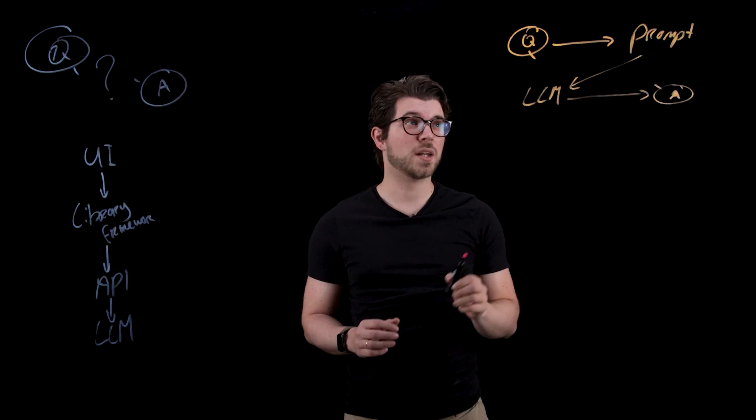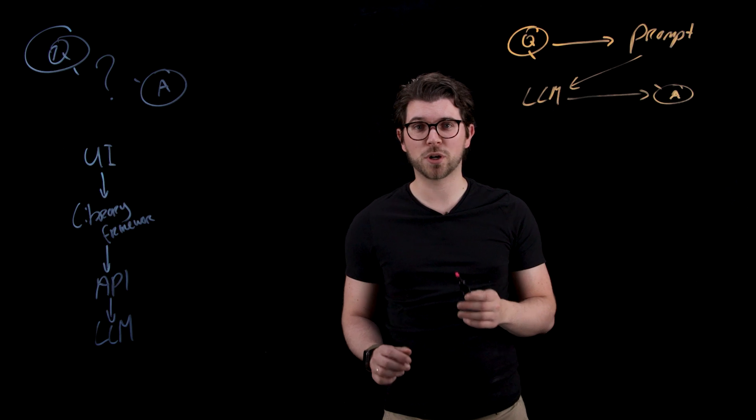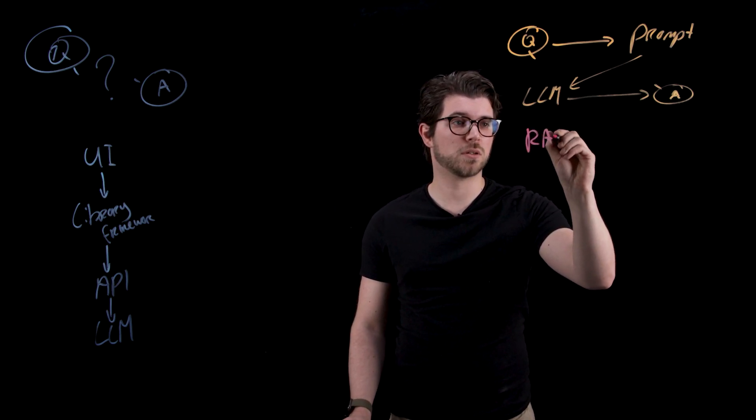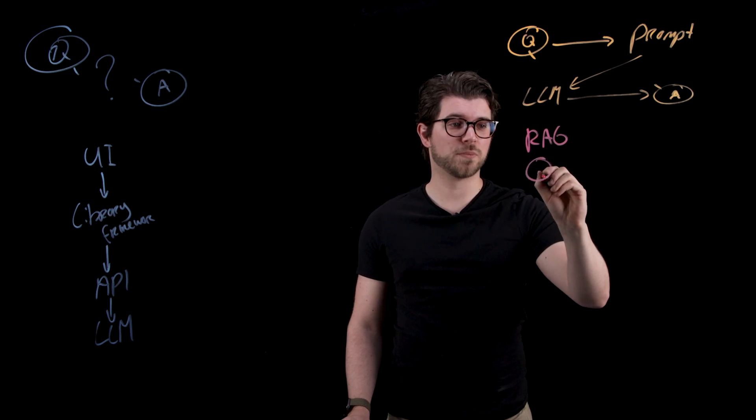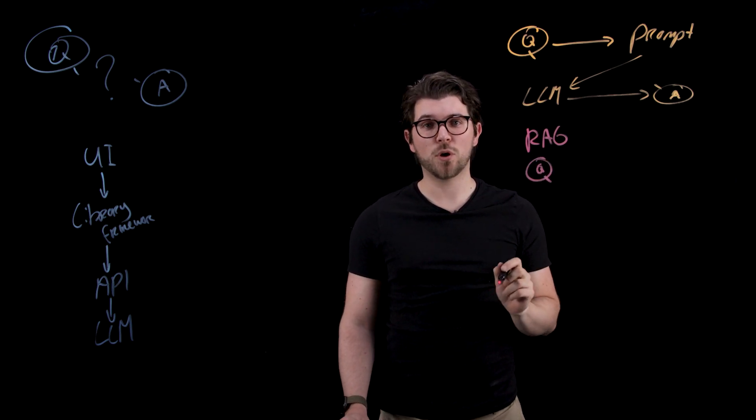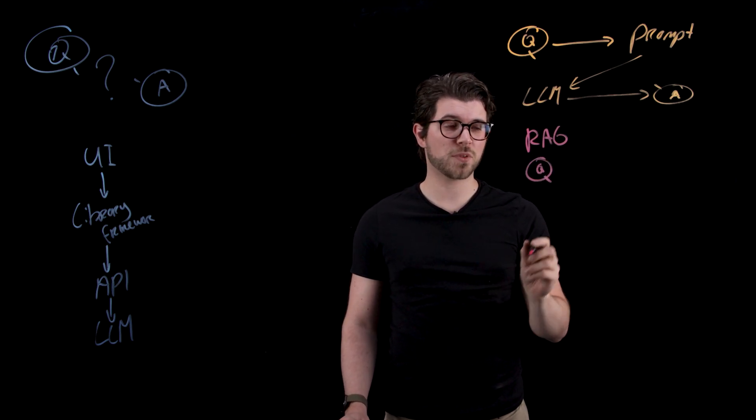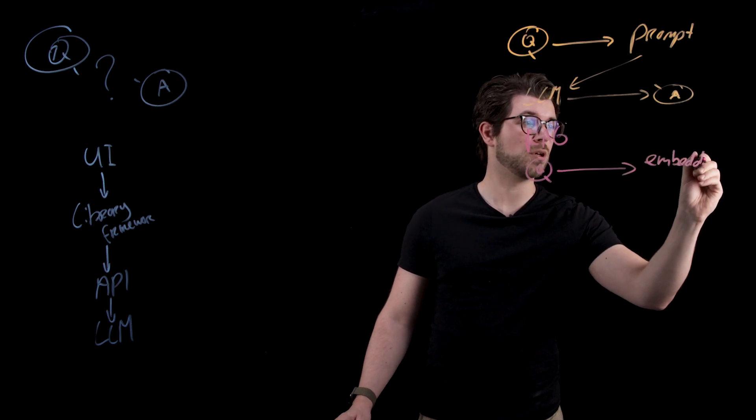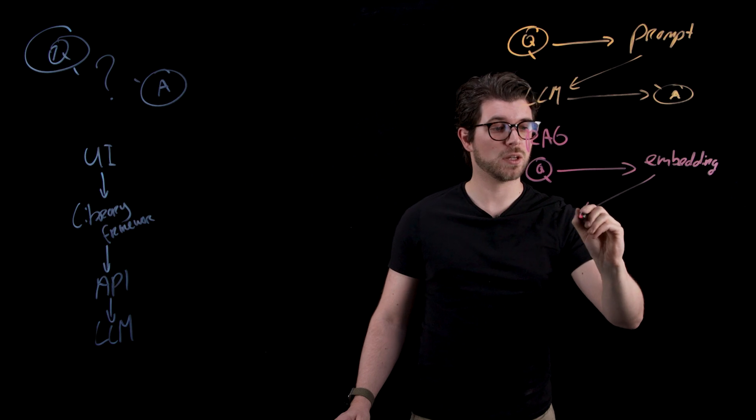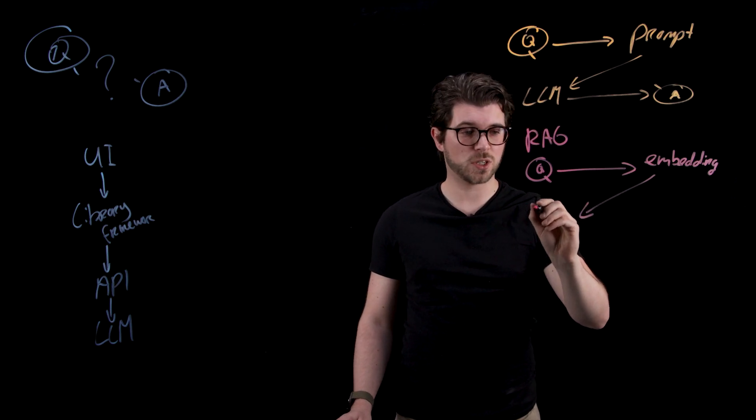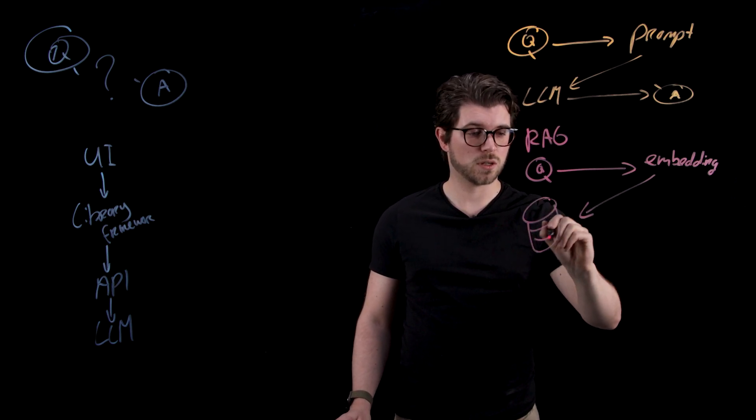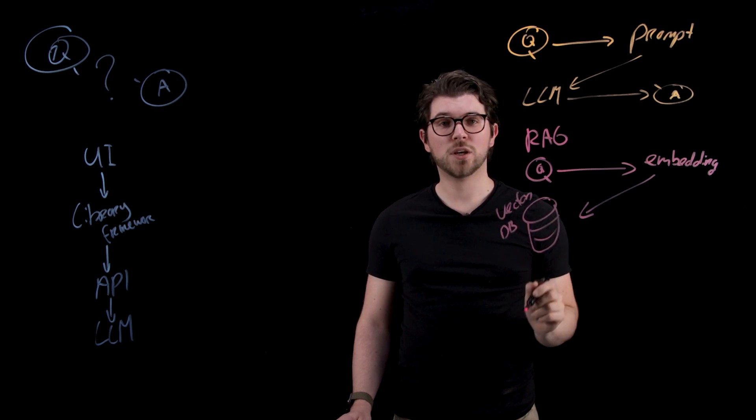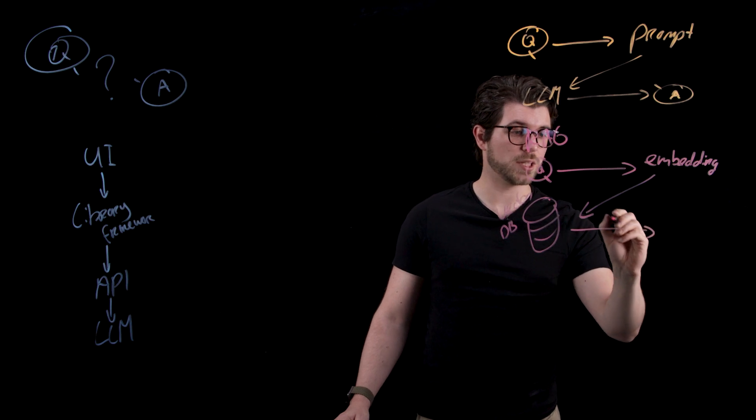There's also a more complex pattern next to basic prompting, and this is what we call RAG or retrieval augmented generation. Again, it starts with a question. This time your question won't be directly put inside a prompt but it will be turned into an embedding. This embedding will then be used by a vector database to find relevant context. So the vector database is right here, and with this vector database you can retrieve relevant context. We call this top-end matches.